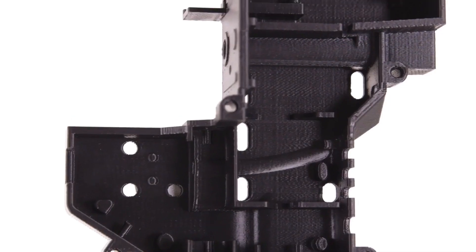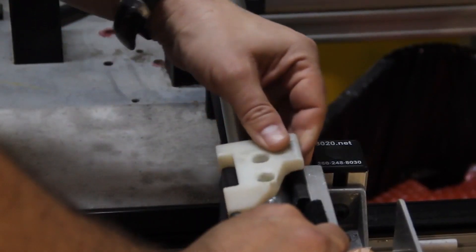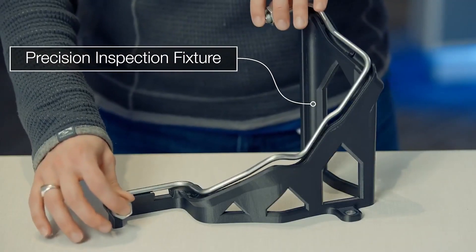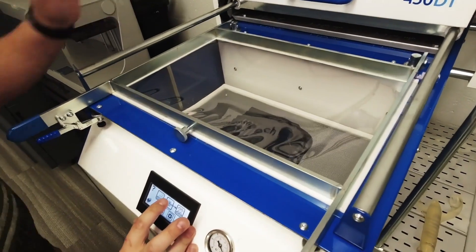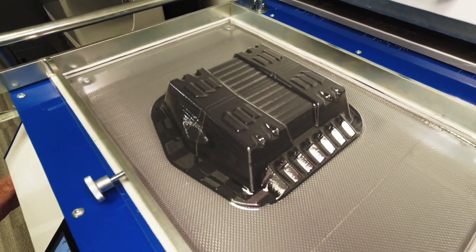While it's great at producing functional prototypes, Stratasys FDM printers also excel in manufacturing support scenarios such as jigs and fixtures, production mold making for applications like thermal forming and sand casting, and even end-use parts.